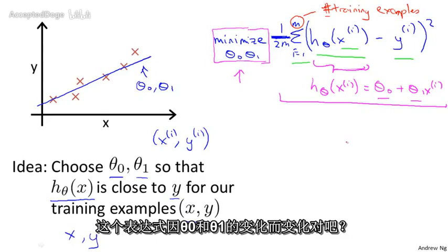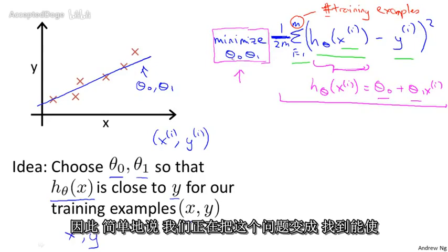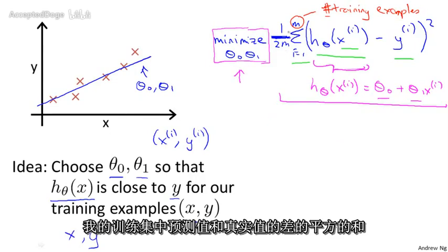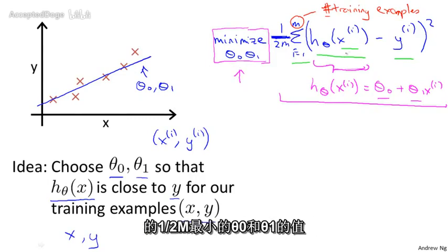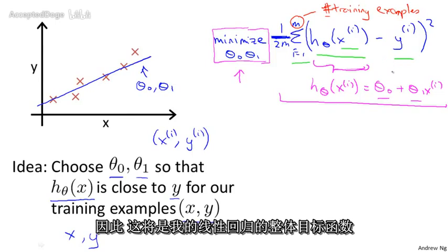So just to recap, we're posing this problem as find me the values of θ₀ and θ₁ so that the average, or really 1 over 2m times the sum of squared errors between my predictions on the training set minus the actual values of the houses on the training set is minimized. So this is going to be my overall objective function for linear regression.